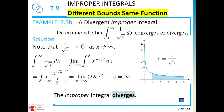Now the same function 1/√x but integrated from 1 to ∞. This is improper because of the infinite upper bound. We rewrite as limit r → ∞ of ∫_1^r 1/√x dx. The antiderivative is 2√x; evaluating gives 2√r - 2. As r → ∞, √r → ∞, so the expression increases without bound. The limit does not exist — this integral diverges.